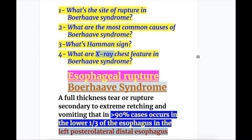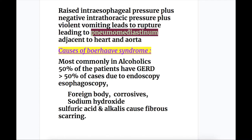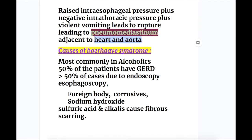It is a rupture of the esophagus in the lower one-third, most commonly in the left posterolateral esophagus. It occurs due to raised intraesophageal pressure plus a negative intrathoracic pressure plus violent vomiting, leading to rupture and pneumomediastinum adjacent to the heart and aorta.